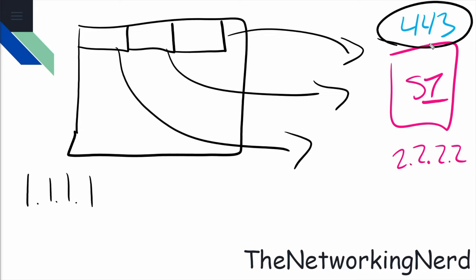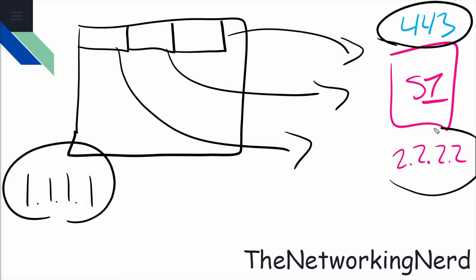So we have three pieces of the equation already: the source IP, the destination IP, and the destination port. However, what's the source port going to be? There's such a thing as ephemeral ports, and these ports are created and destroyed as needed by the host system so that traffic can be forwarded out to the destination. This is where we start getting into multiplexing — where there are multiple instances of the same application running on a host, and it allows the host to keep track of those individual sessions by using port numbers.